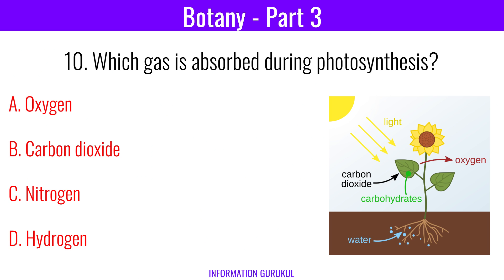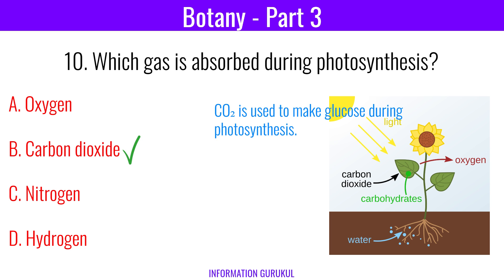Which gas is absorbed during photosynthesis? Carbon dioxide. Carbon dioxide is used to make glucose during photosynthesis.